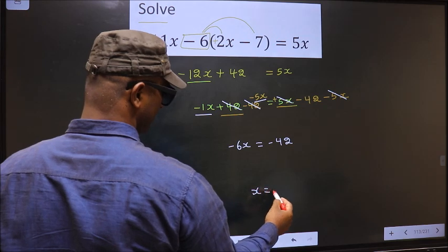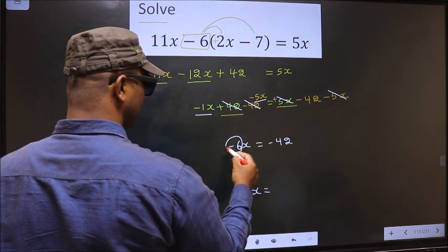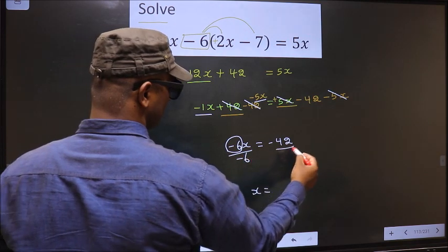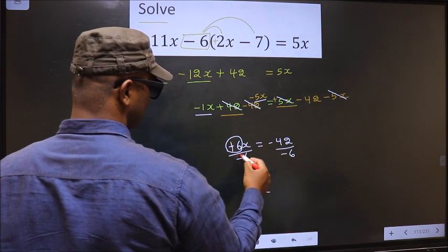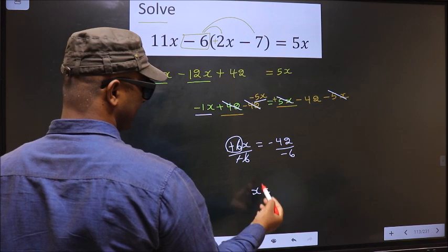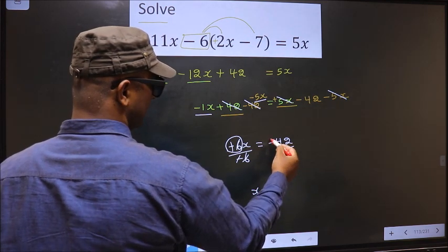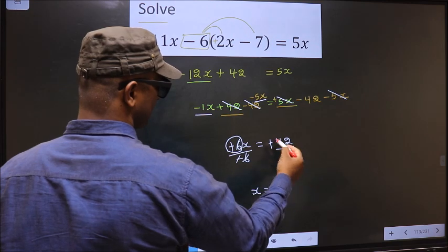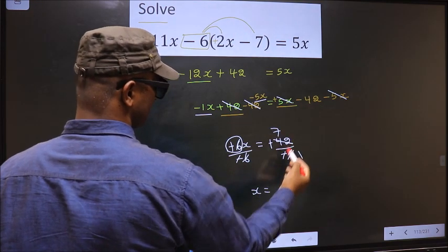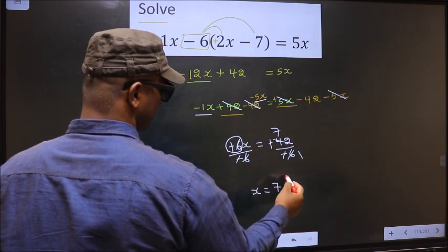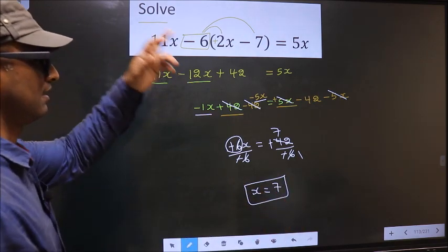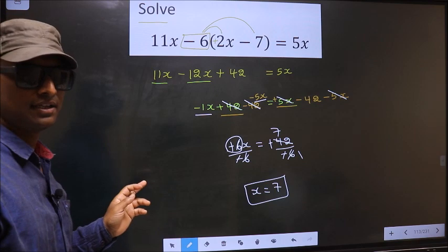Now to get x, we should remove minus 6. To remove minus 6, you divide by minus 6 on both sides. This cancels out. Here we get x. Here, cancel the negative symbol and let us cancel in 6 table. 6 ones, 6 sevens. So we got 7. 7 is our answer. Am I clear?